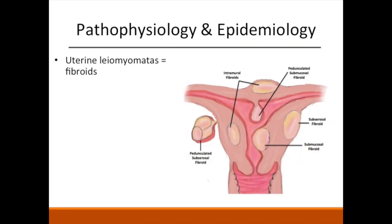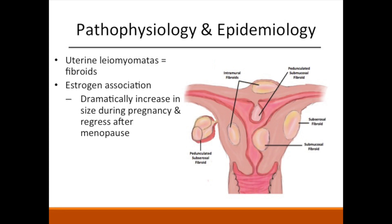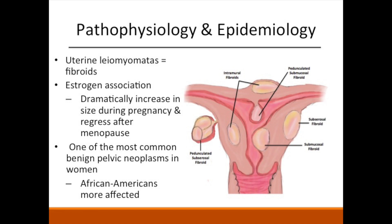Fibroids are benign tumors composed of smooth muscle cells and fibrous connective tissue arising from the muscular layer of the uterus. They are highly variable in size and are classified based on their location: submucosal, intramural, and subserosal. Their size can dramatically increase during pregnancy and regress after menopause, suggesting an association with estrogen. Overall, fibroids are one of the most common benign pelvic neoplasms in women, with greater incidence in African American women, and are often diagnosed in the 30s and 40s.